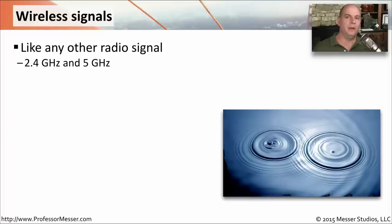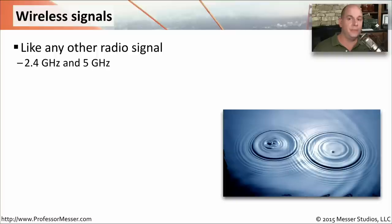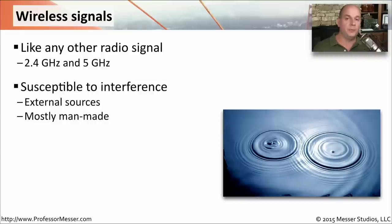When we think about wireless signals, we're often thinking about an AM or FM radio in our car, or even a satellite radio. A wireless network is very similar — it simply uses frequencies in the 2.4 gigahertz and 5 gigahertz range. Just as there can be interference and problems hearing your AM, FM, or satellite radio stations, there can be problems on your wireless network. It's very susceptible to interference, coming from sources outside our network or even our own devices.